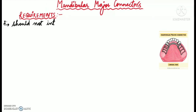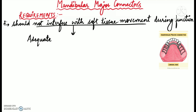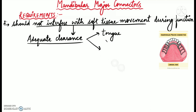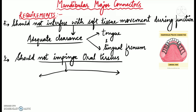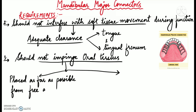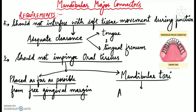Another requirement is that the mandibular major connector should not interfere with soft tissue movements during function. It should have adequate clearance for the tongue and lingual frenum. The mandibular major connector should not impinge on oral tissues when the prosthesis is placed, removed, or during functional movements. It should be placed as far as possible from the free gingival margin, and if mandibular tori are present, adequate relief should be provided so the prosthesis does not fulcrum on the tori during movement.